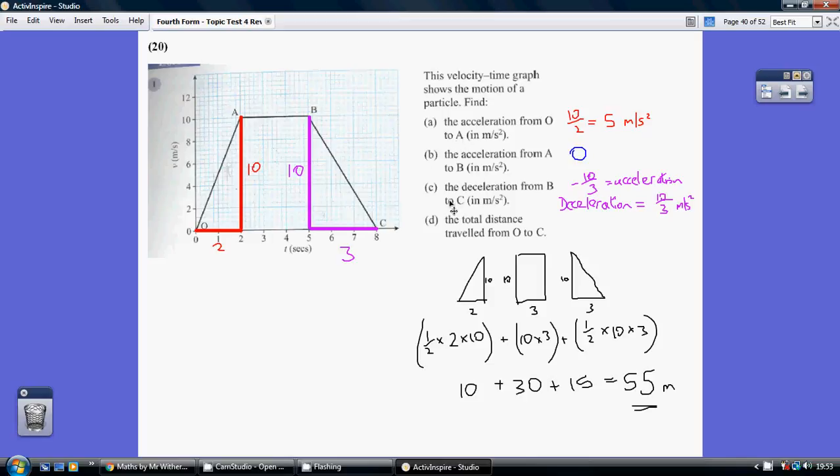So we've got three accelerations or decelerations. Remember, deceleration is just negative acceleration. So three slopes to work out and one area. So the acceleration from O to A, what's this slope here?